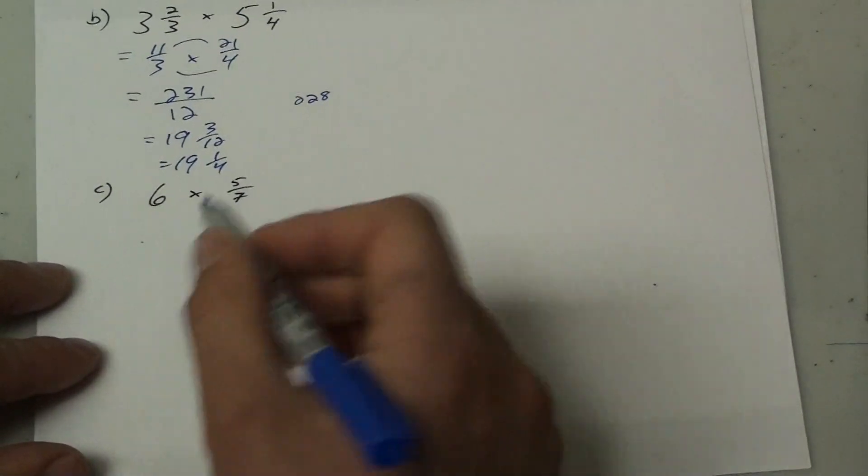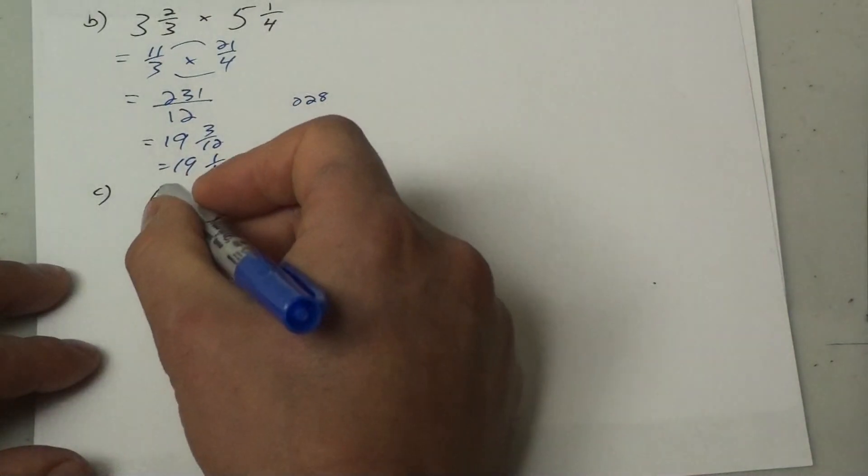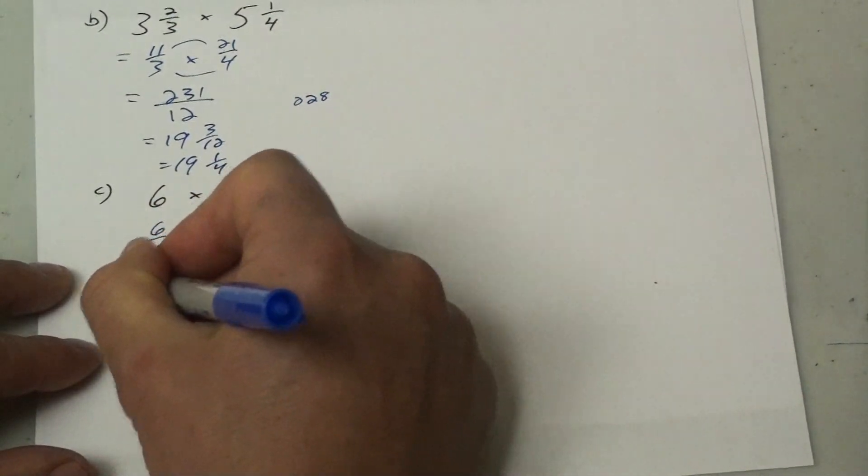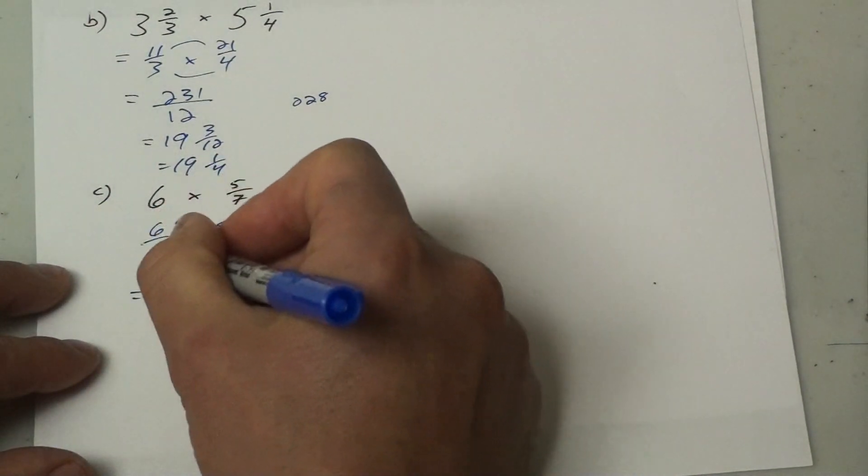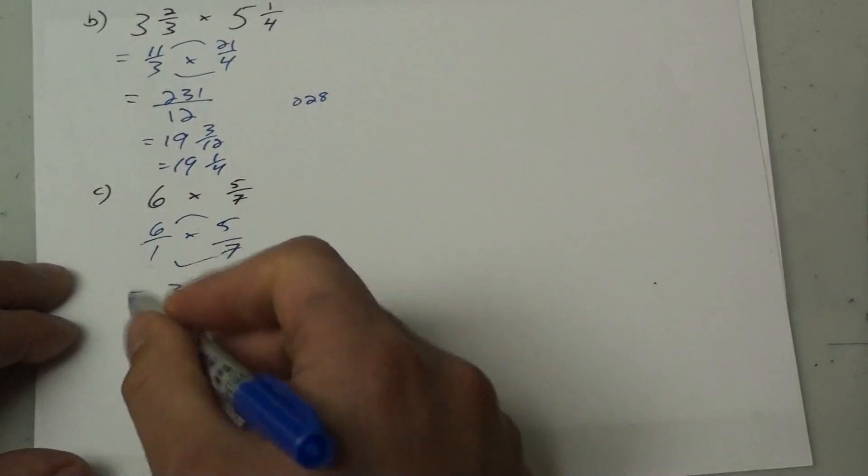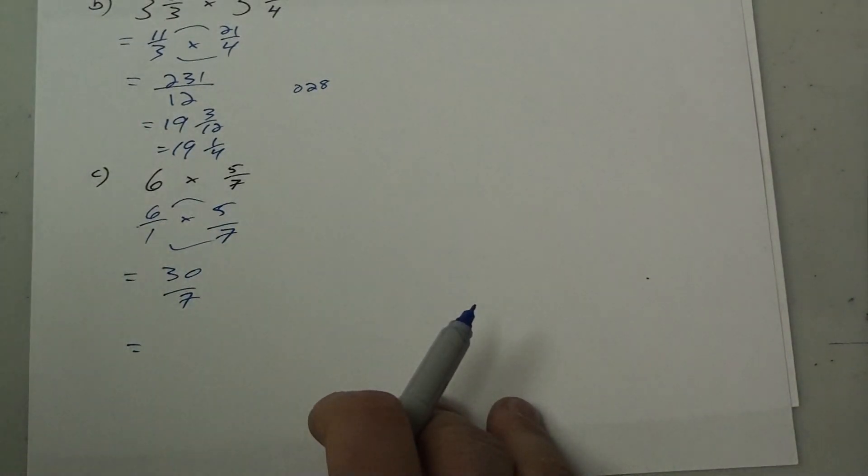When you have a whole number times a fraction, change your whole number into over 1. The 6 is 6 over 1 times 5 over 7. And again, you multiply your tops together, multiply your bottoms together. So I get 30 over 7 and that as an improper fraction, you may or may not want to reduce it down.